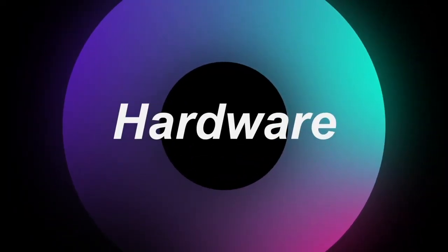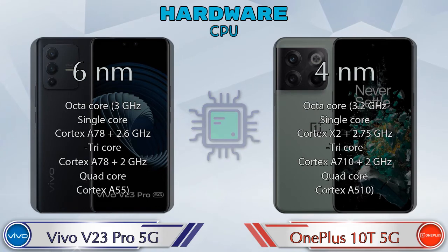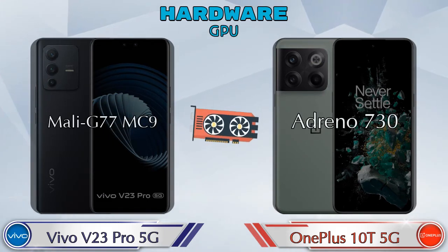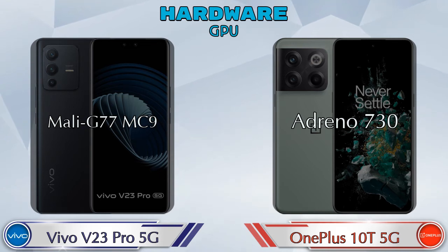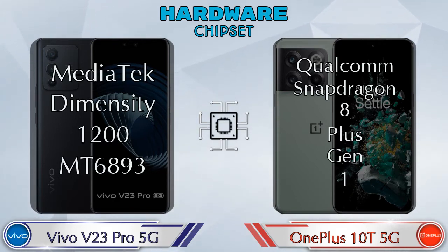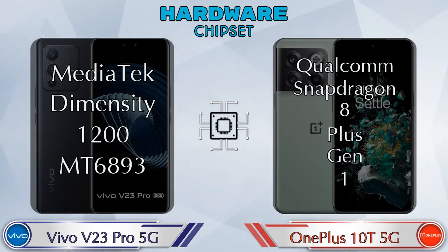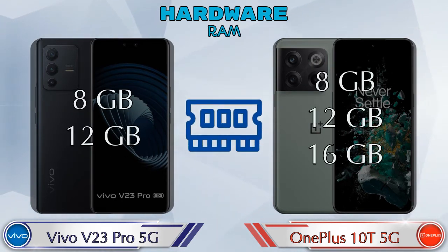First, let's talk about the most important part of the phone: hardware. Starting with the CPU and GPU — the Vivo V23 Pro 5G has the Mali-G77 MC9 GPU, while the OnePlus 10T 5G has the Adreno 730. For the chipset, the V23 Pro 5G uses the MediaTek Dimensity 1200 MT6893, while the 10T 5G uses the Qualcomm Snapdragon 8 Plus Gen 1.